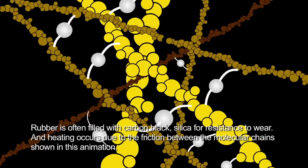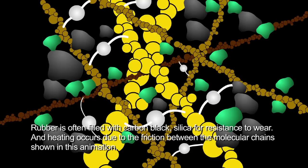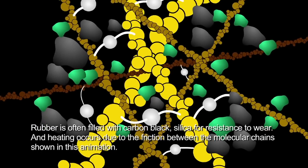Rubber is often filled with carbon black and silica for resistance to wear, and heating occurs due to the friction between the molecular chains shown in this animation.